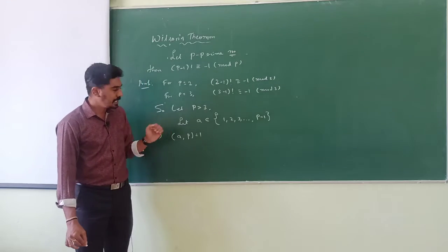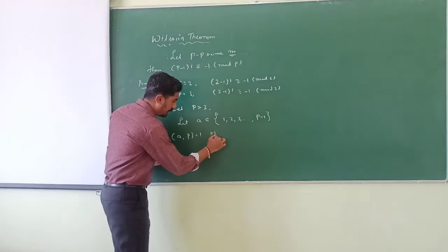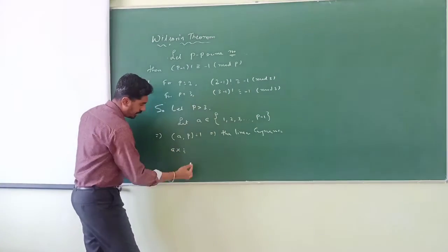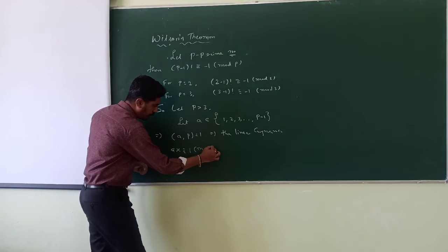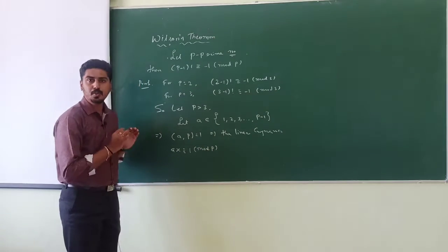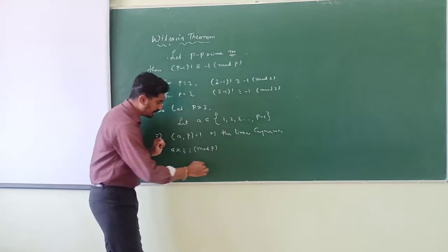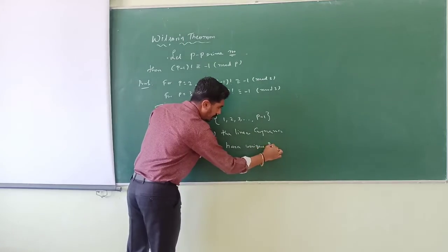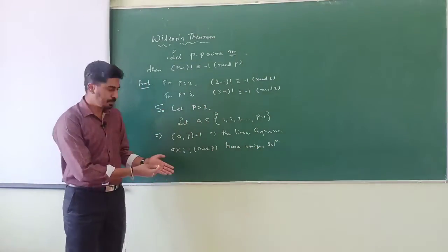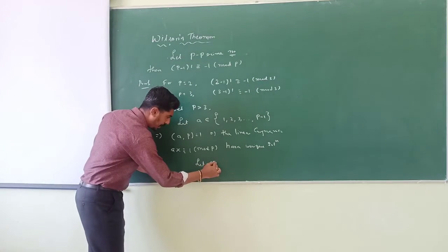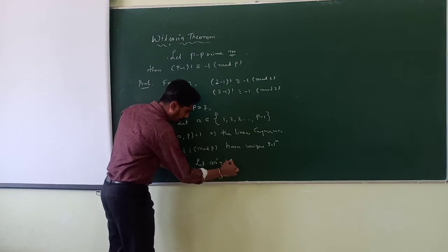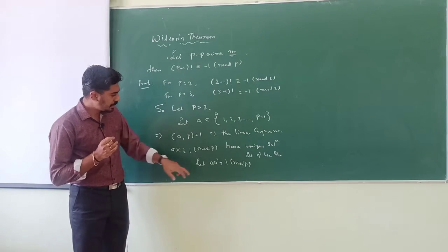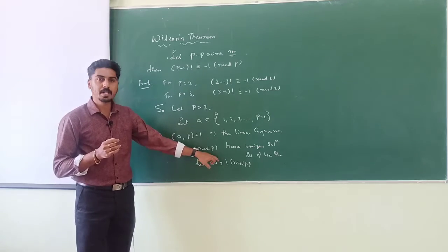So the linear congruence ax ≡ 1 (mod p) has a unique solution, since the GCD of a and p is 1. Let a' be the solution, so a · a' ≡ 1 (mod p). Now let us check in what cases a and a' will be equal.